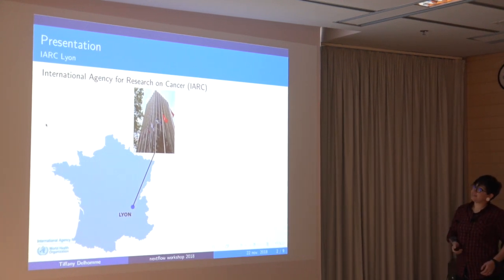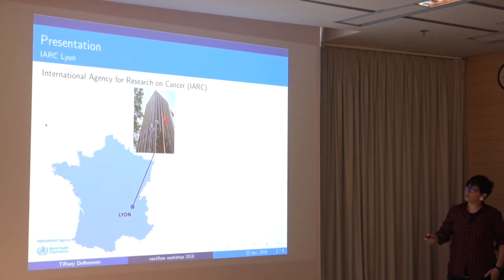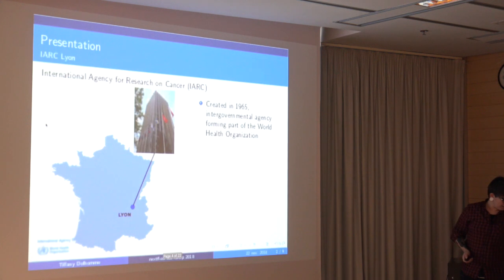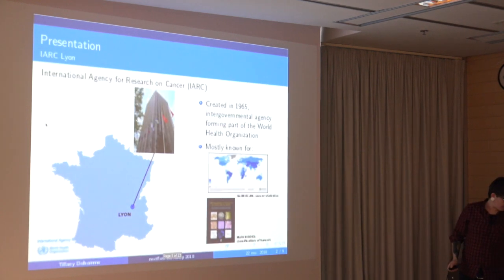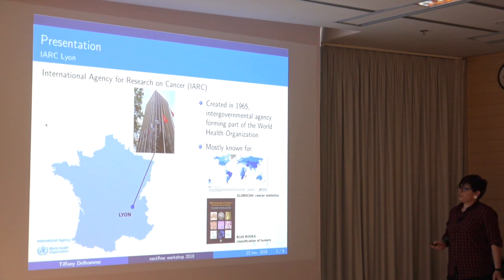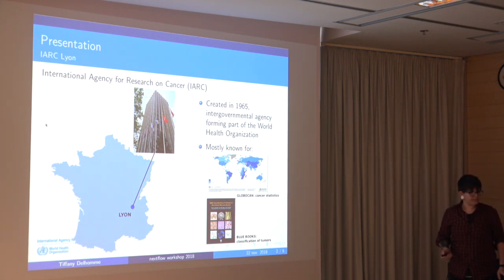What is IARC? It is the International Agency for Research on Cancer, located in Lyon, in the southeast of France. It's a big tower of around 15 floors, created in 1965 by the WHO. It is mostly known for two things: the GloboCan, which provides annual cancer statistics, and the Blue Books, which is the classification of tumors.